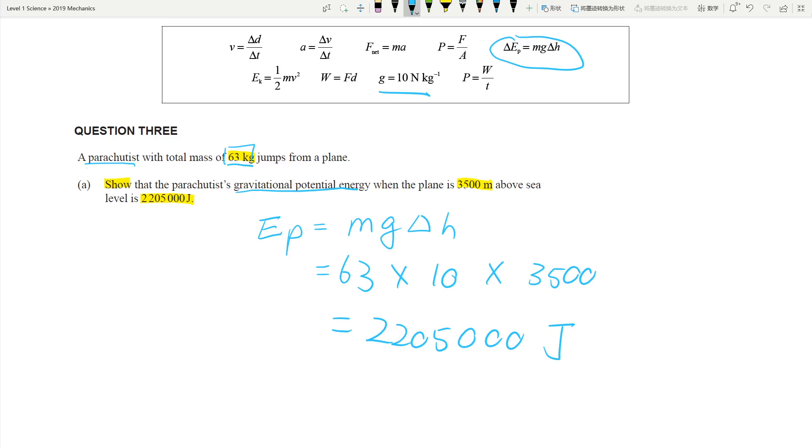This is to do with gravitational potential energy. So you need to use the equation Ep equals mgh. So Ep equals mg delta h, which equals 63 times 10 times 3500, and you should get 2,205,000 joules. And this, guys, is a merit question, believe it or not. Very straightforward.